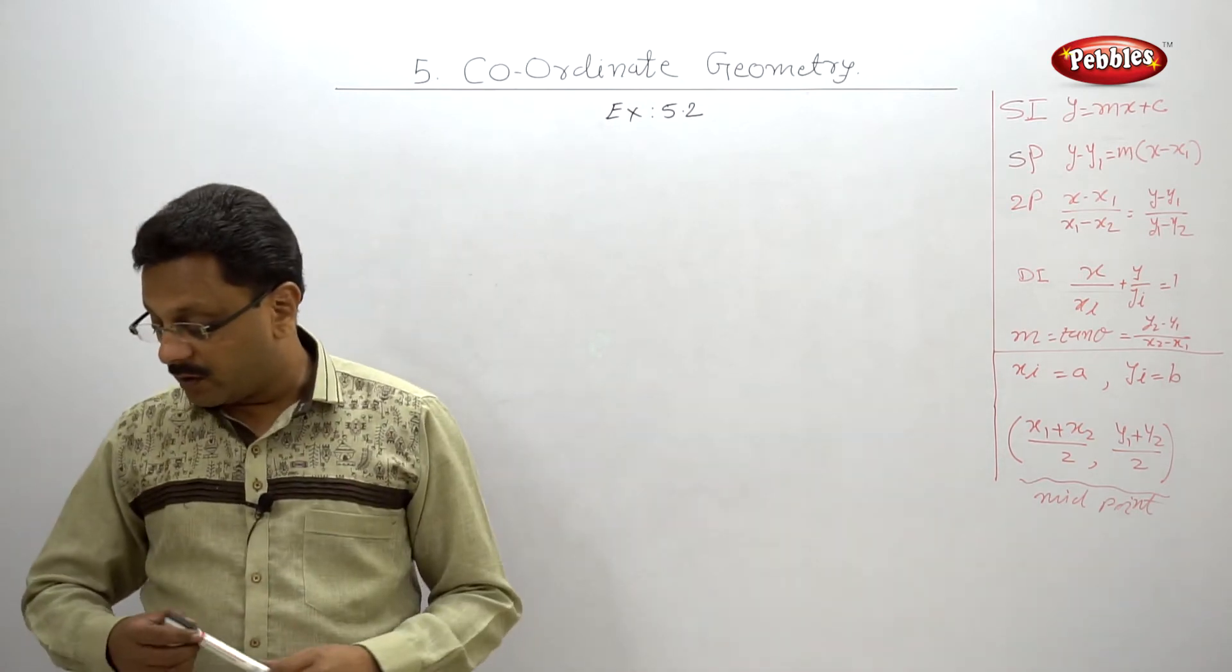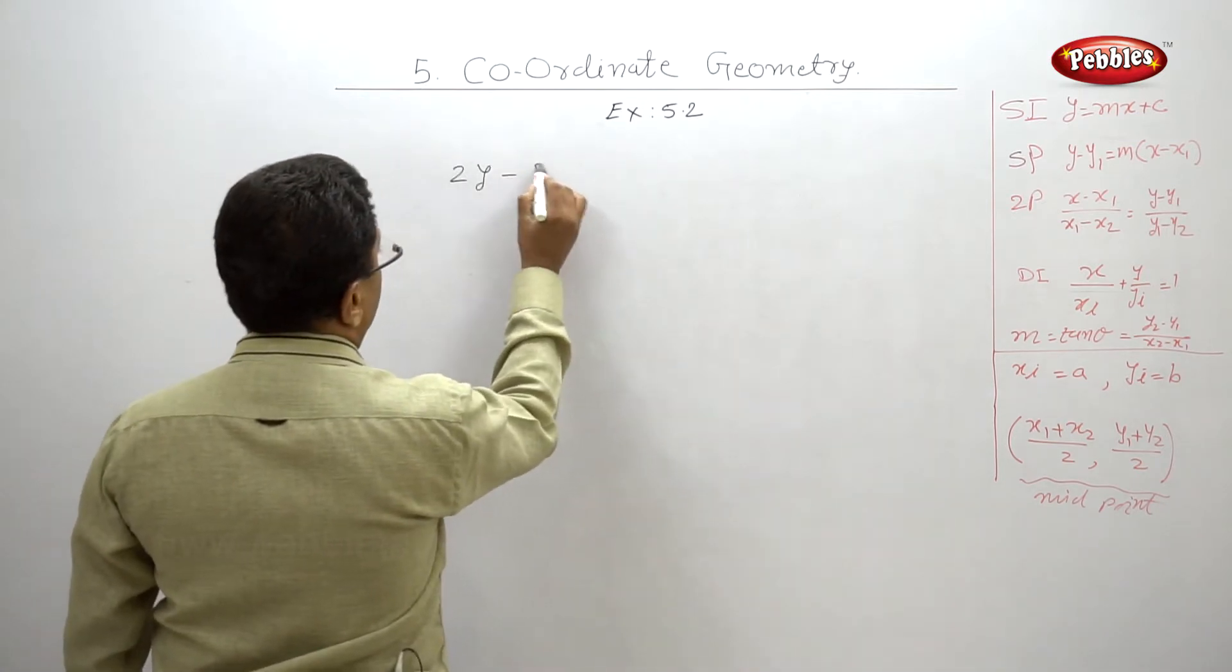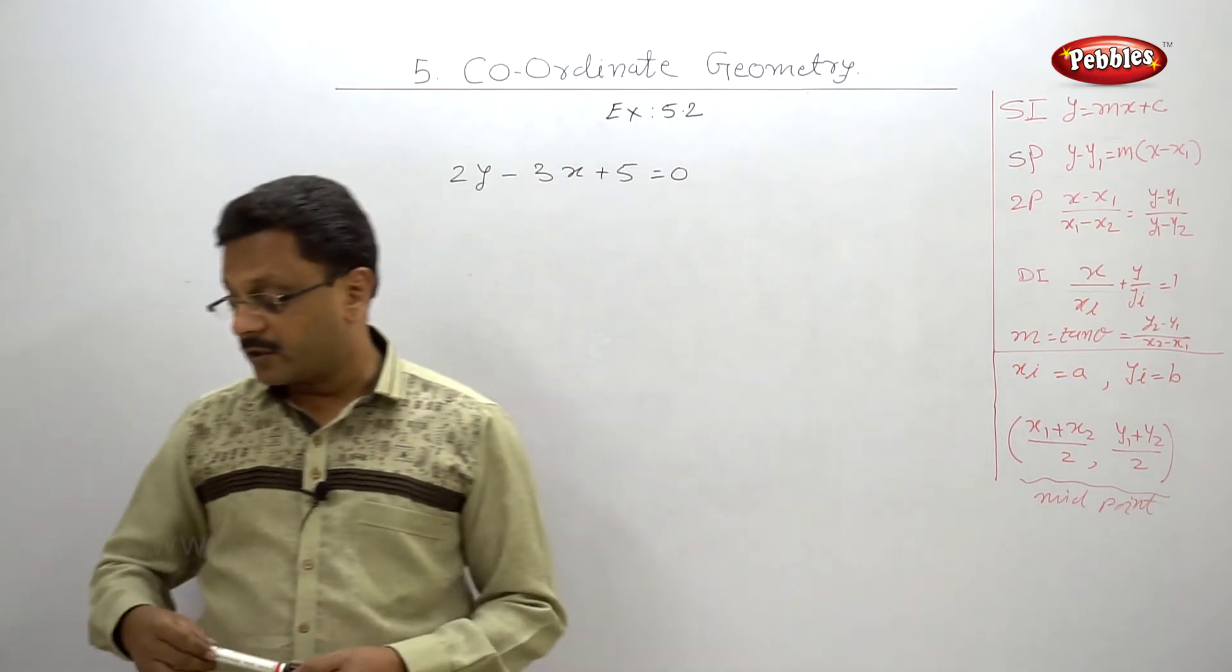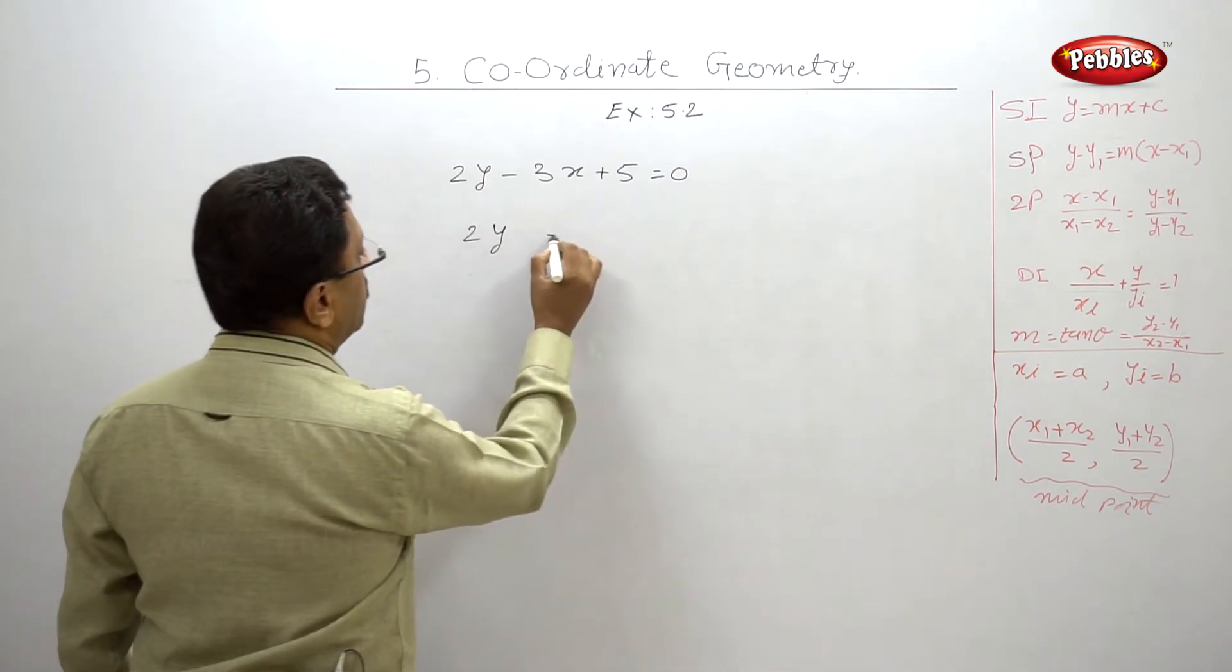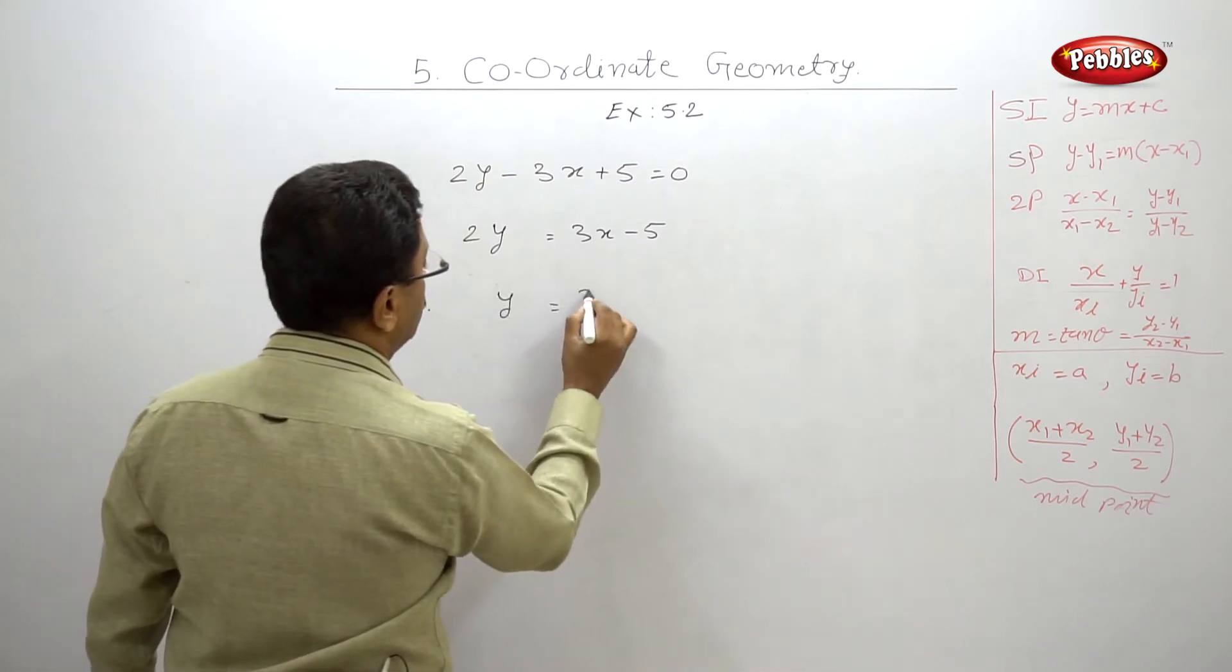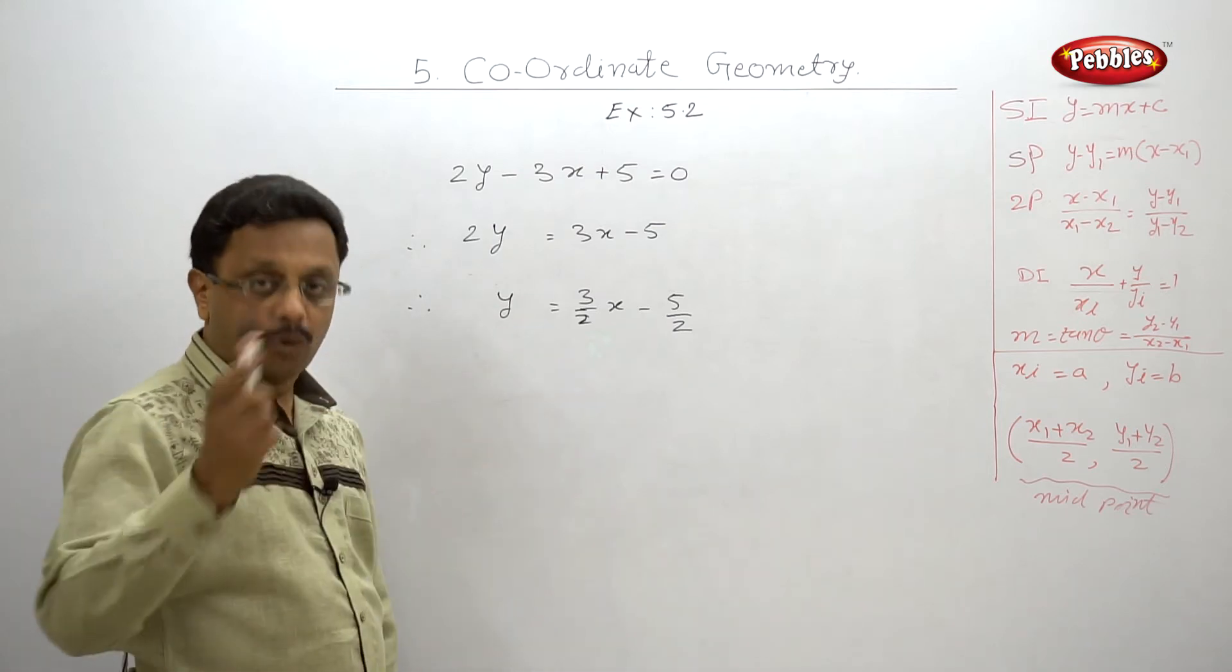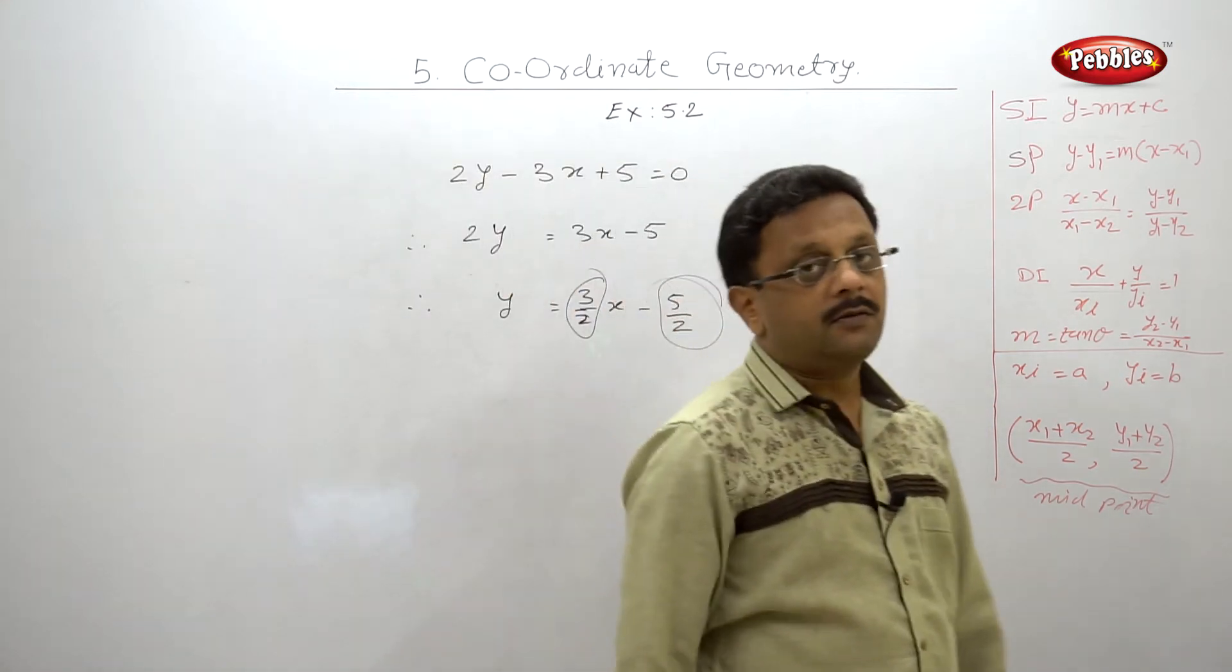Now let us solve the first one in that 2y minus 3x plus 5 equal to 0. This equation or these kind of equations they are given and they are asked to write in a slope-intercept form. That is, y is equal to mx plus c. So let us write that 2y is equal to 3x minus 5 and hence y is equal to 3 by 2x minus 5 by 2. So this is in a slope-intercept form, whereas 3 by 2 is the slope and minus 5 by 2 is the y-intercept.